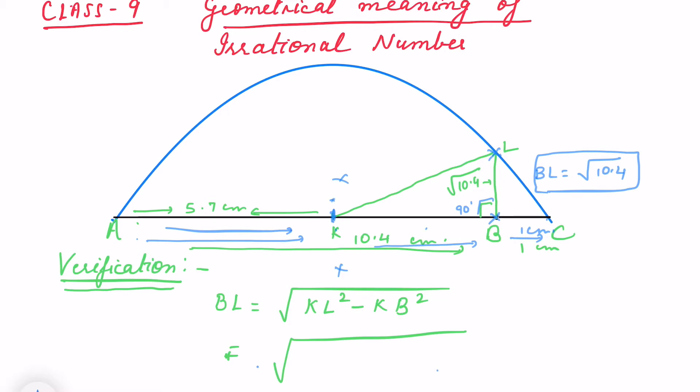Here we have bisected which one? It is 10.4 and we have extended to 1, and that we have bisected. That is 11.4 by 2, that is 5.7. So this distance is 5.7. Same way, AK and KC is 5.7.